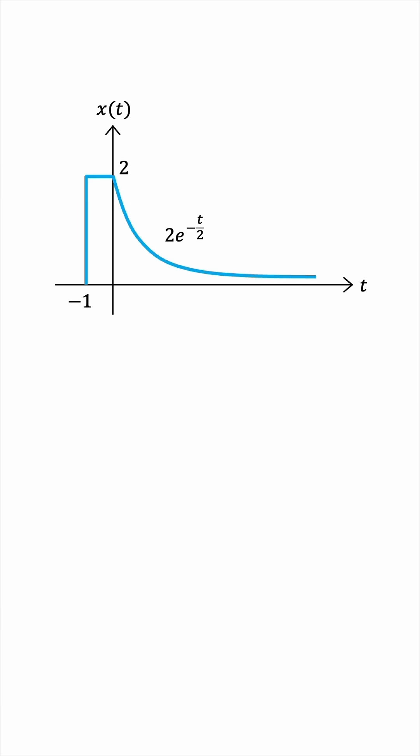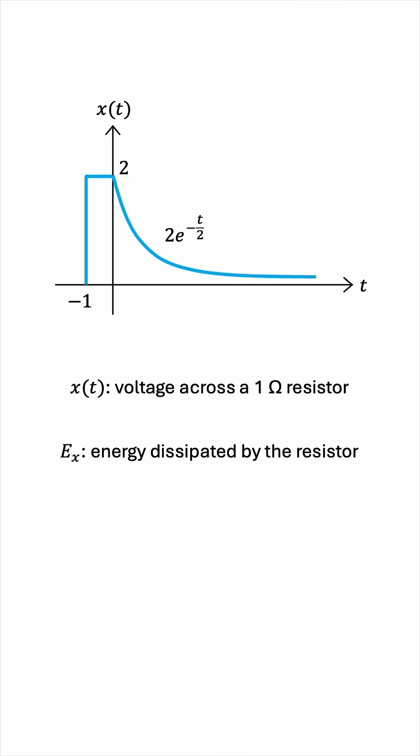Normally, we view the signal — in this case x of t — as the voltage across a 1-ohm resistor. Then, the energy of the signal, E_x, would be the energy dissipated in this 1-ohm resistor.